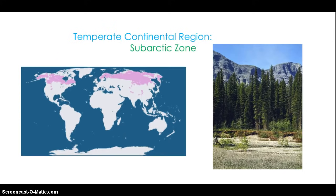The subarctic climate zone, also referred to as the taiga, is usually found in the interior of high latitude continents, not coastal areas. Since there are no large continents in high latitudes in the southern hemisphere, subarctic climate is only found in the northern hemisphere. Subarctic climate has two seasons: a long, extremely cold winter and a cool to mild summer lasting only 2 to 3 months. The main cause of the temperatures is latitude. Temperatures can reach negative 40 degrees in winter and as high as 85 degrees in summer. Very little precipitation falls here — between 10 and 20 inches annually — because of low evaporation due to cold temperatures.